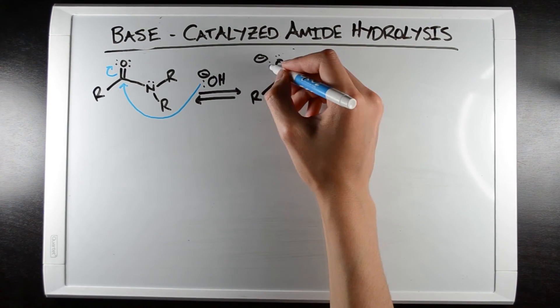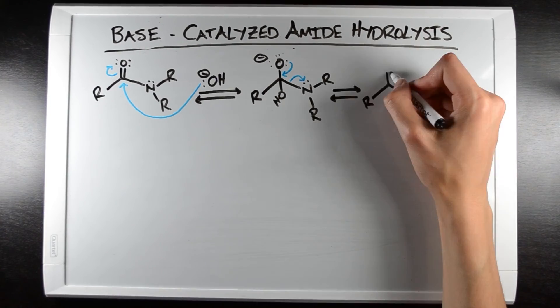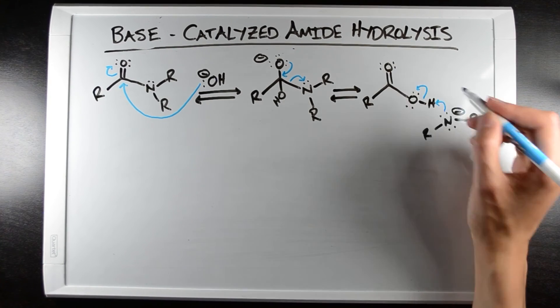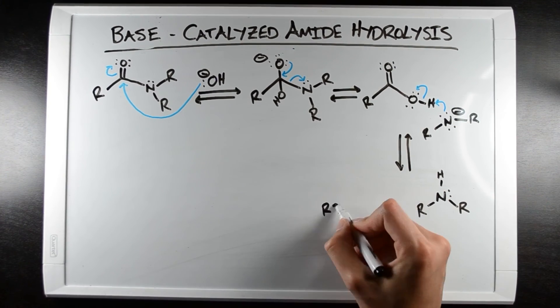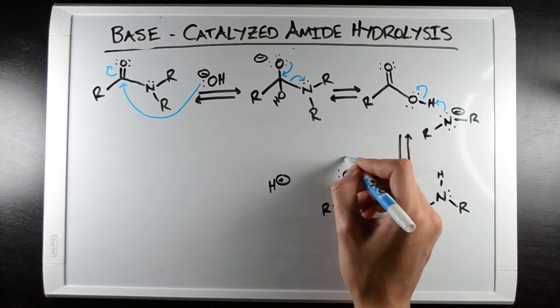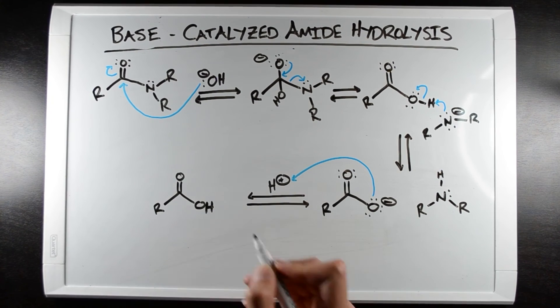When these electrons come back down to reform a double bond, the nitrogen is expelled. This expelled nitrogen takes a proton from the resulting carboxylic acid in a favorable acid-base reaction. Finally, the carboxylate can be protonated with acid to reform the carboxylic acid.